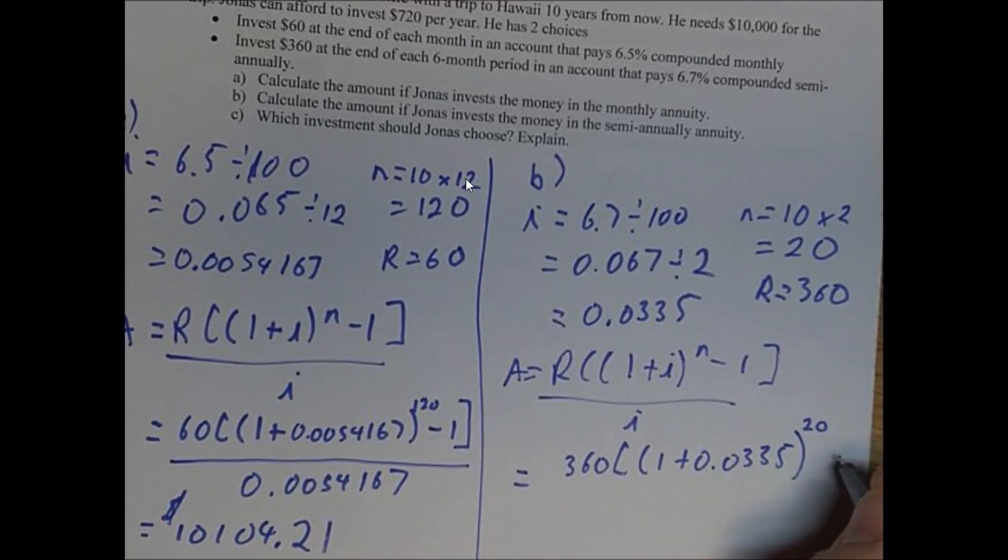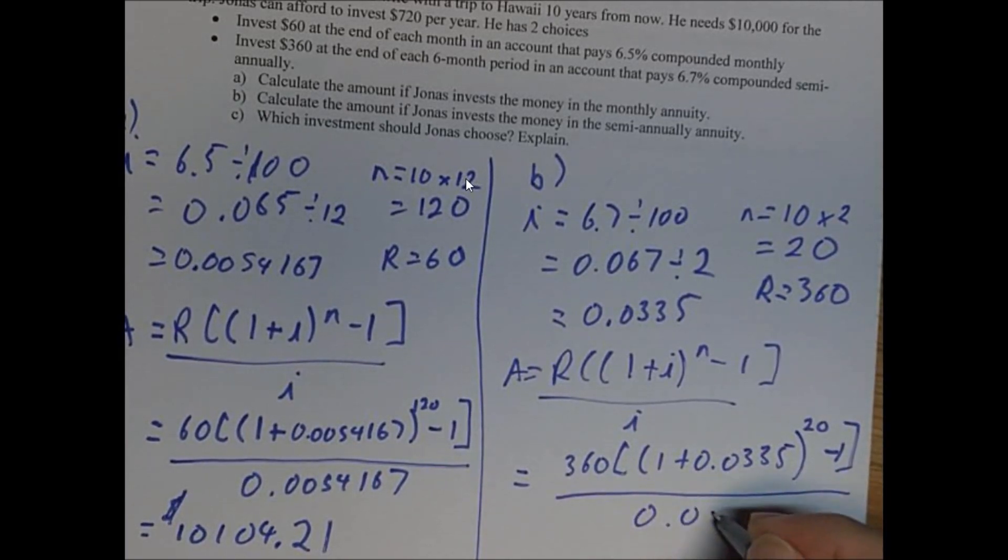Because that's our N, minus one, close the bracket, all over 0.0335.